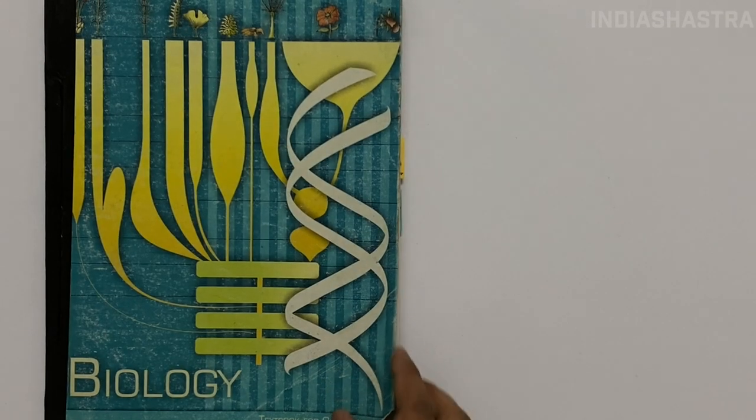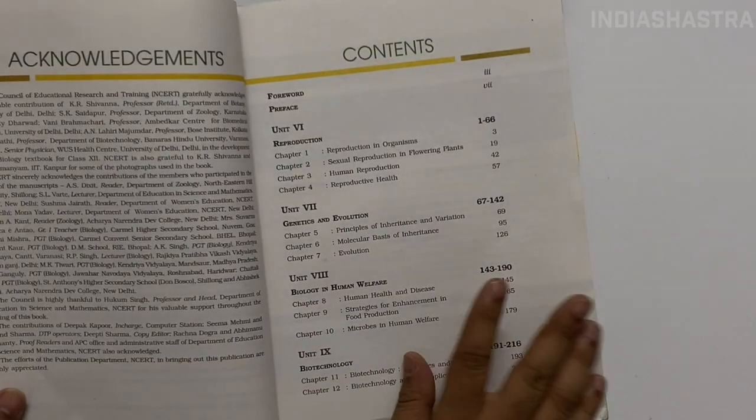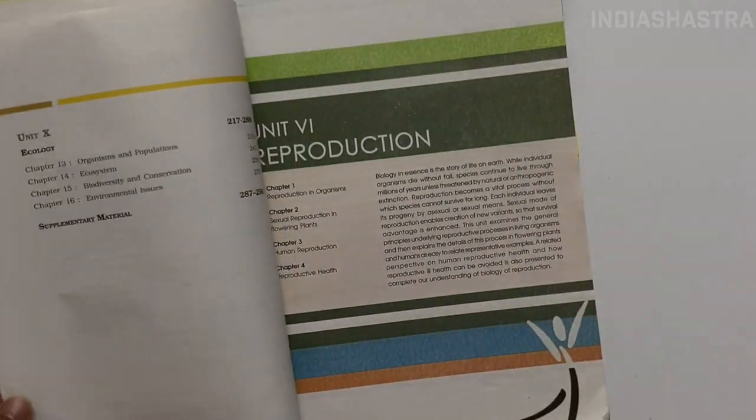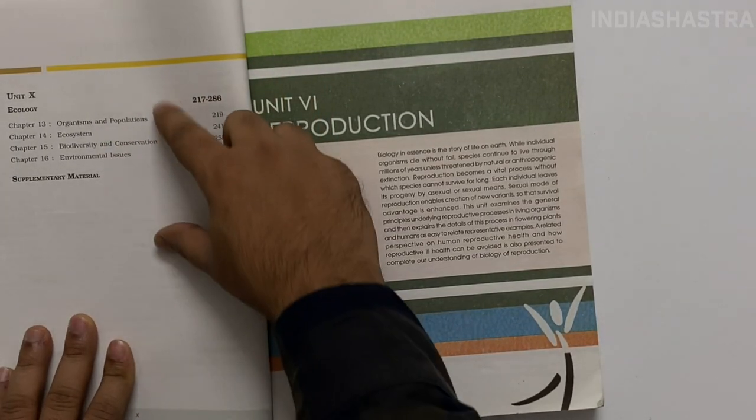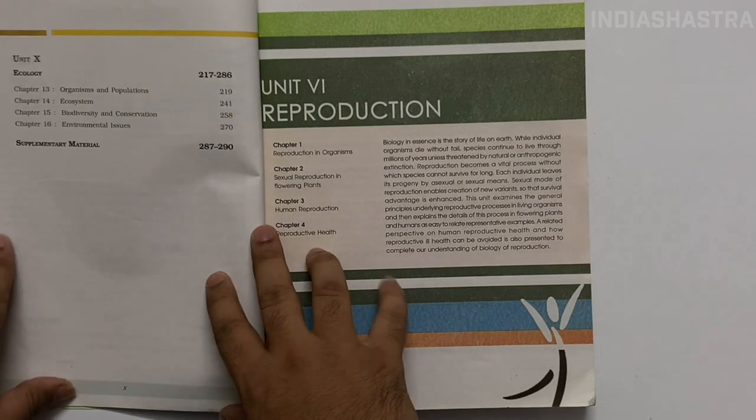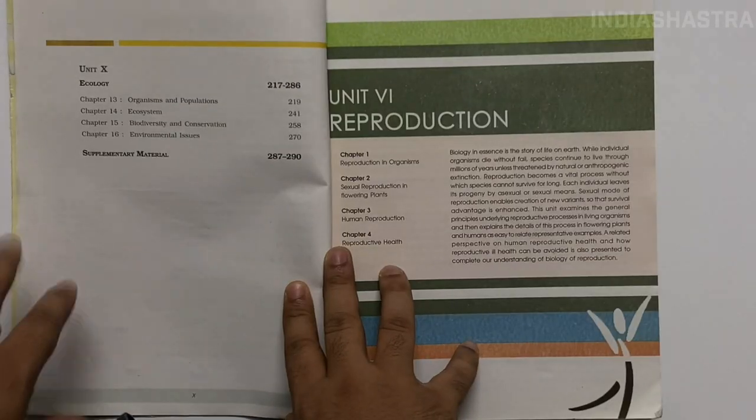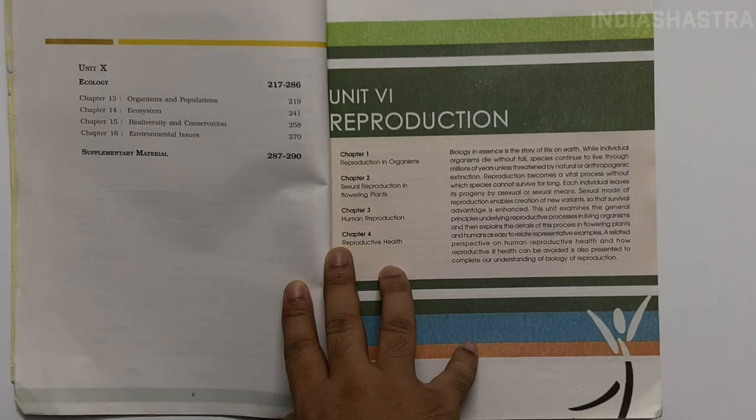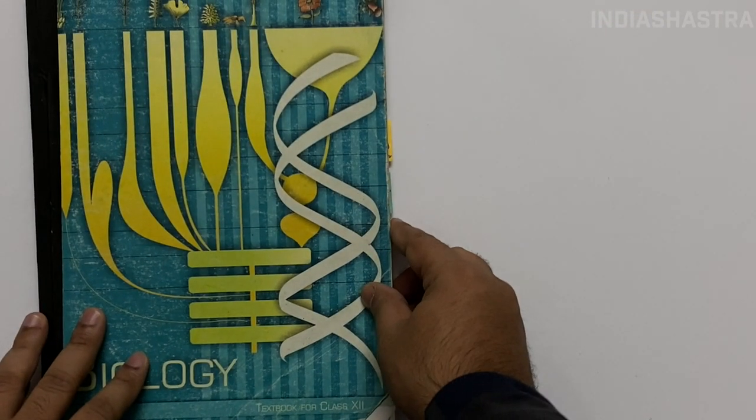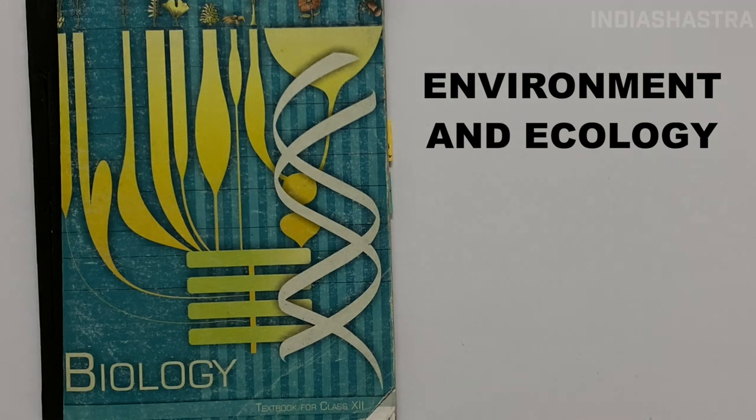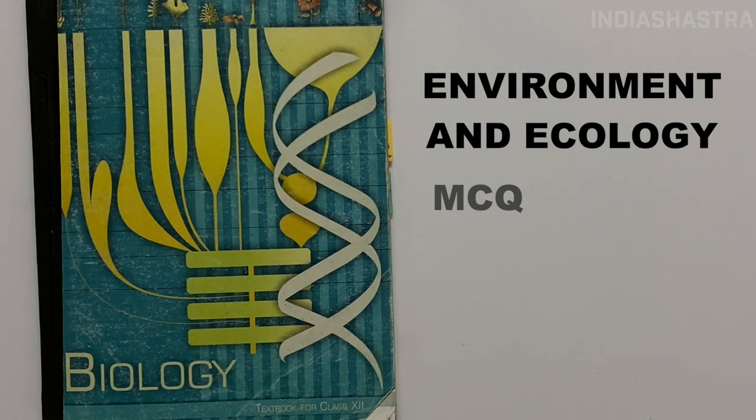Environment and Ecology carries approximately 50 marks in prelims examination with a cutoff around 100 marks. Last four chapters of Class 12 Biology can make your concepts clear and you can find most questions coming from this source. The concepts you learn can help you eliminate wrong options in multiple choice questions.